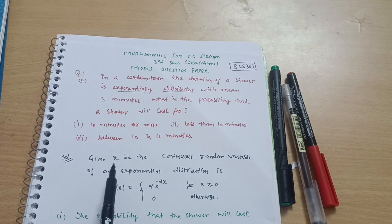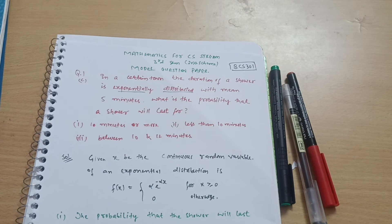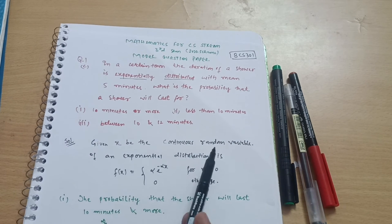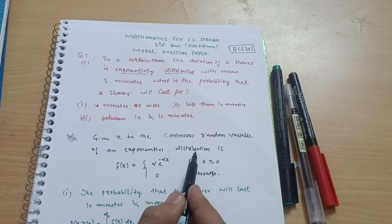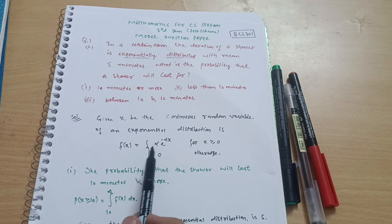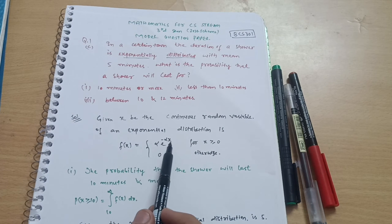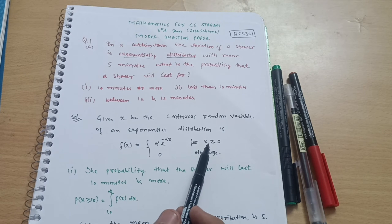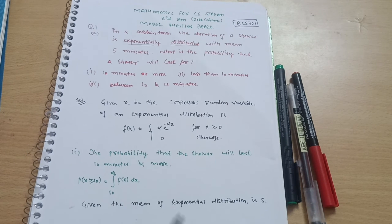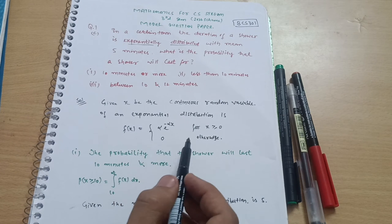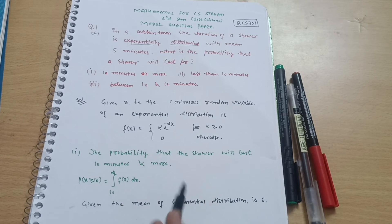How to frame this question in the examination if it is a seven or eight marks question: write — let x be the continuous random variable of an exponential distribution. The exponential distribution is given by f(x) = α·e^(−αx) for x ≥ 0, and 0 otherwise — meaning for negative values from minus infinity to 0, the function is 0.